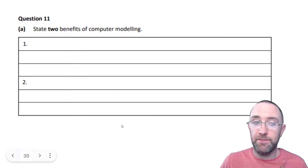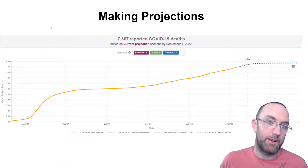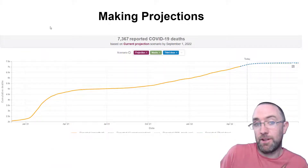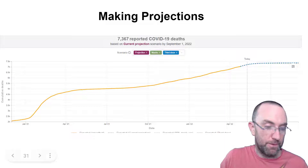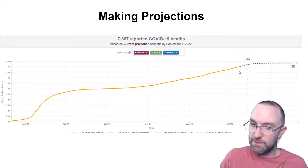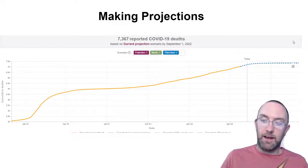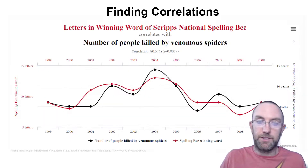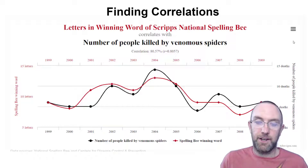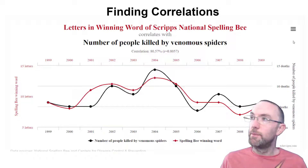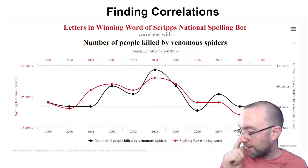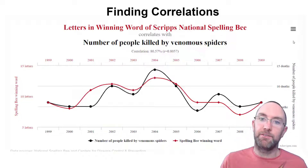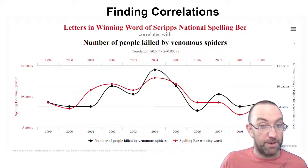Question 11 is asking for two benefits of computer modeling. For example, computer modeling could be making projections - we've tracked the data up to this point, let's project where it could go next. It could say one thing is correlated with another. There's a great website called Spurious Correlations that'll find the most unlikely and kind of funny correlations between things you never thought were correlated.